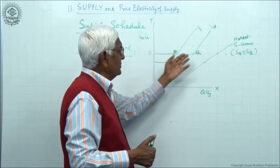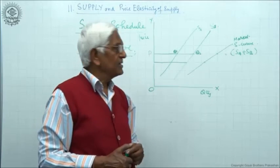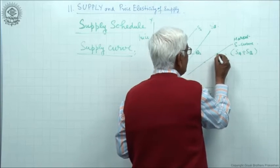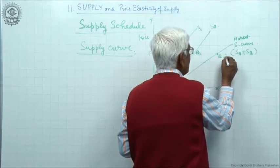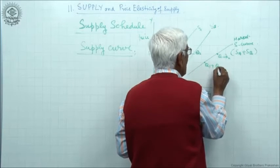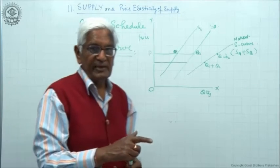This is supply by two. I add supply Pq1 to Pq2. This will give me supply by both. And at this point, supply is q1 plus q2. At this point also, supply is q1 plus q2. This is market supply curve.